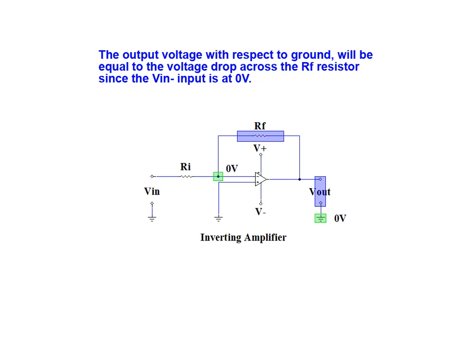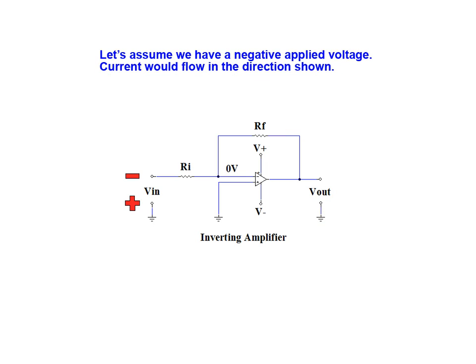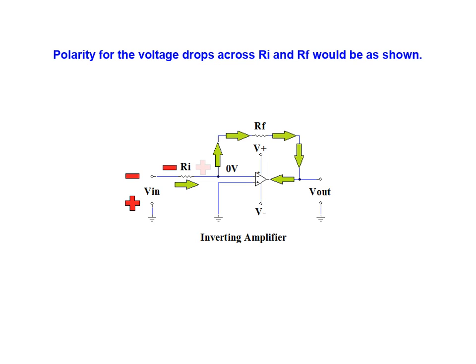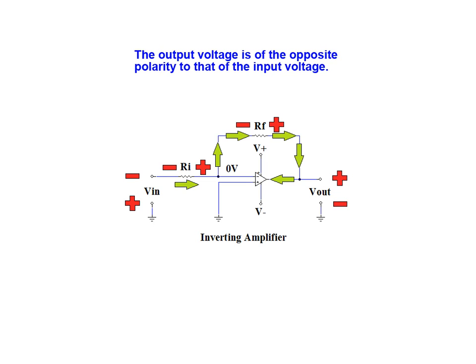This means that the output voltage with respect to ground will be equal to the voltage drop across the RF resistor, since the inverting input is at zero volts. Let's assume that we have a negative applied voltage. That would mean that current would flow in the direction shown here. The polarity for the voltage drops across RI and RF would be as shown. The resulting output voltage is of opposite polarity to that of the input voltage.